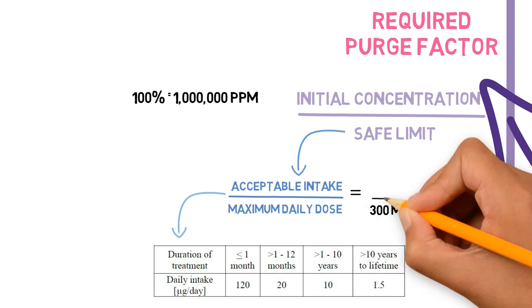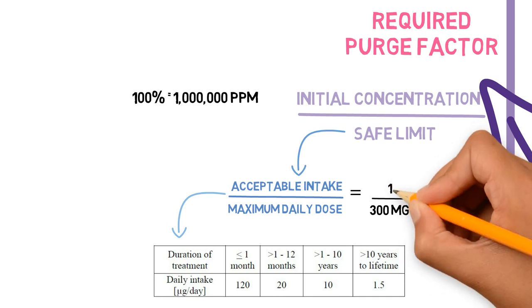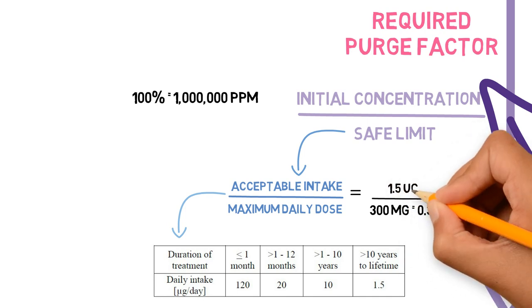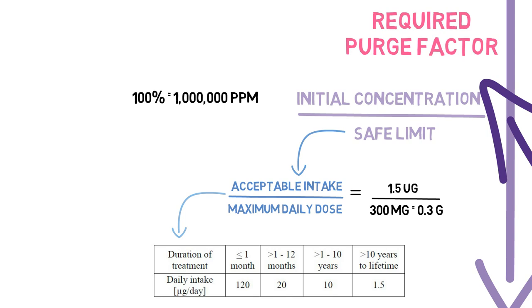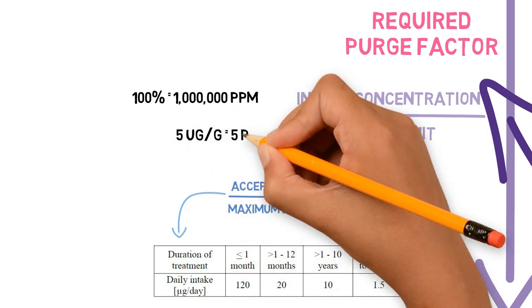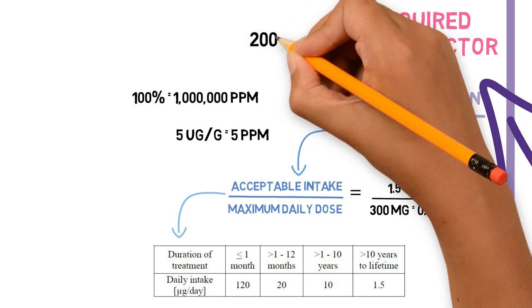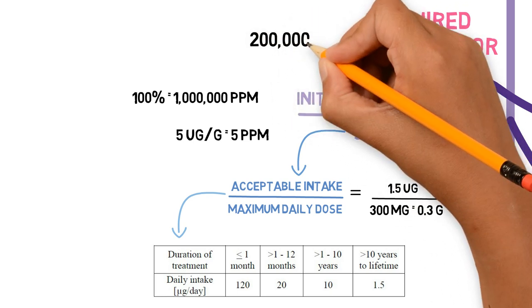So, the safe limit is the acceptable intake, which is 1.5 micrograms, divided by the dose in grams, so 0.3 grams. This gives a limit of 5 micrograms per gram, that is, 5 ppm. If we start with a million ppm and we want to end with less than 5 ppm, our required purge factor is 200,000.